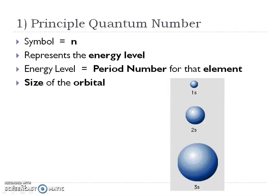The first principal quantum number is represented by N, and that's the energy level. The energy level equals the period number, which is really nice for us. That helps us decide the size of the orbital and the size of that atom. The first period has one energy level, the second period has two energy levels, meaning the 1s fills before the 2s. And look how big your third energy level is going to be, because electrons are filling here, here, and then starting to fill that third energy level.